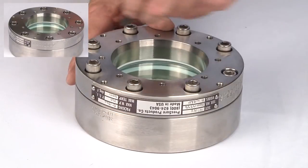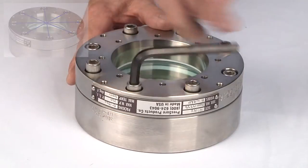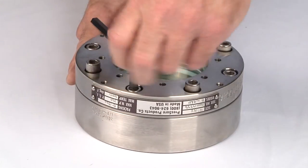Tighten the cap screws, working across diameters, in a star pattern. Continue until the unit body and the retainer cap make contact.